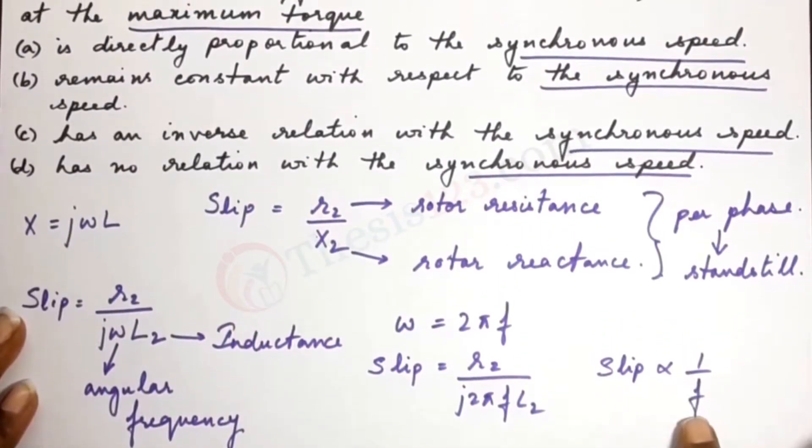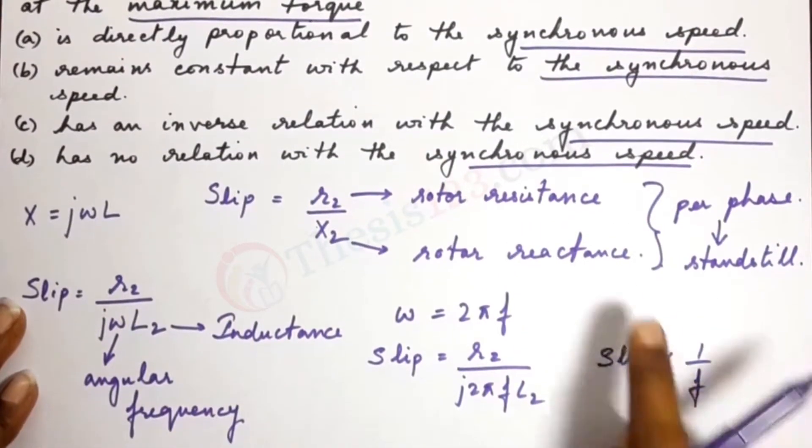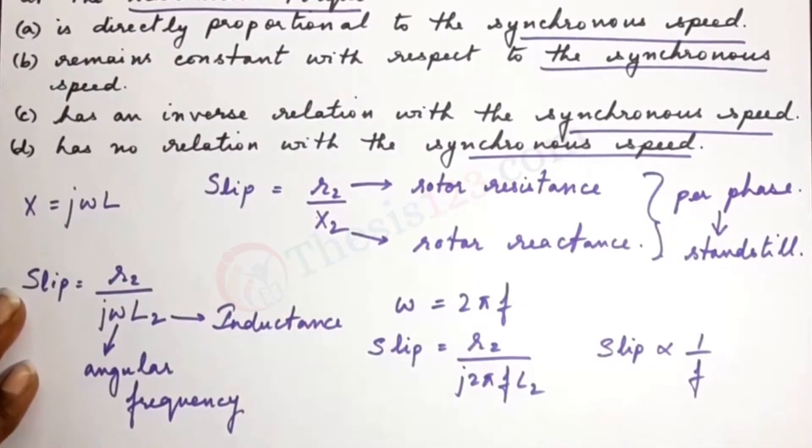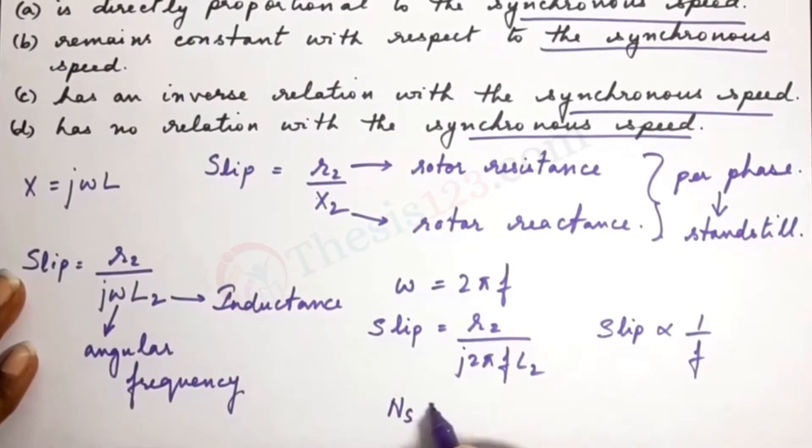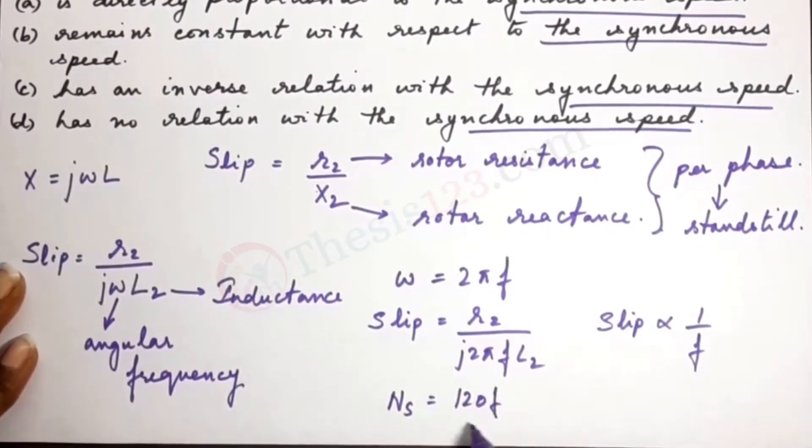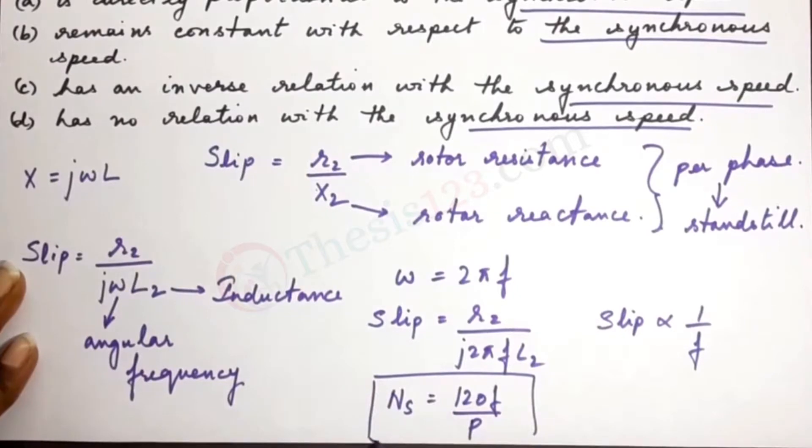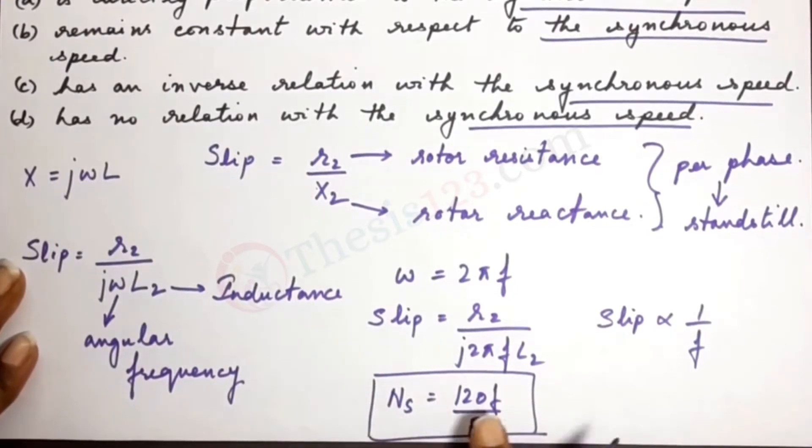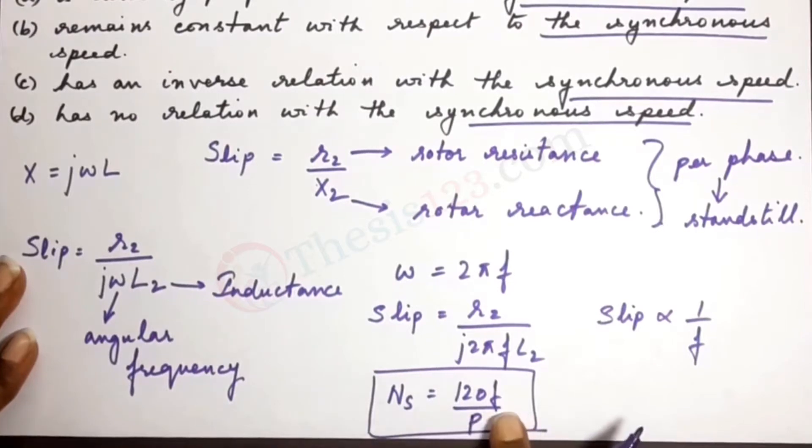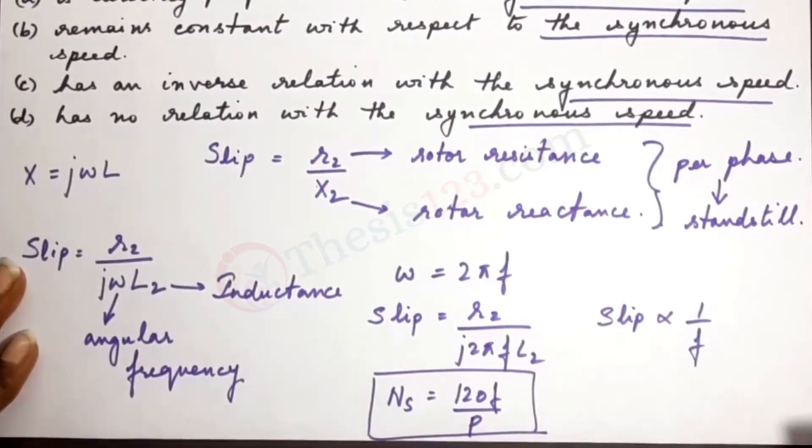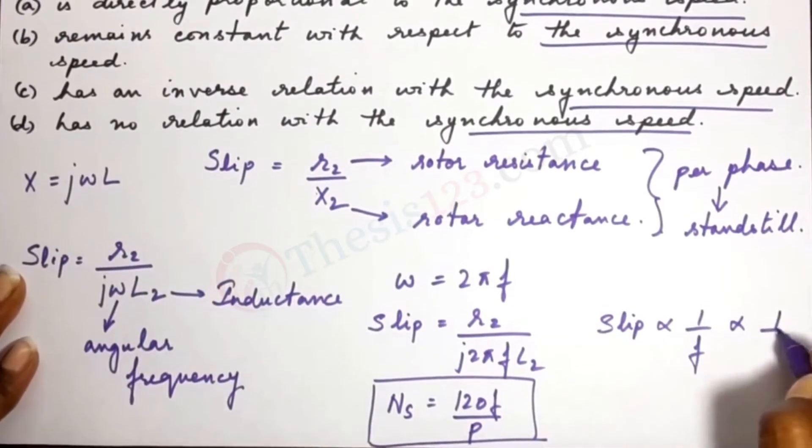Frequency can also be related in terms of speed. Synchronous speed equals 120 F by P. The synchronous speed is directly proportional to frequency, which means frequency is directly proportional to synchronous speed.